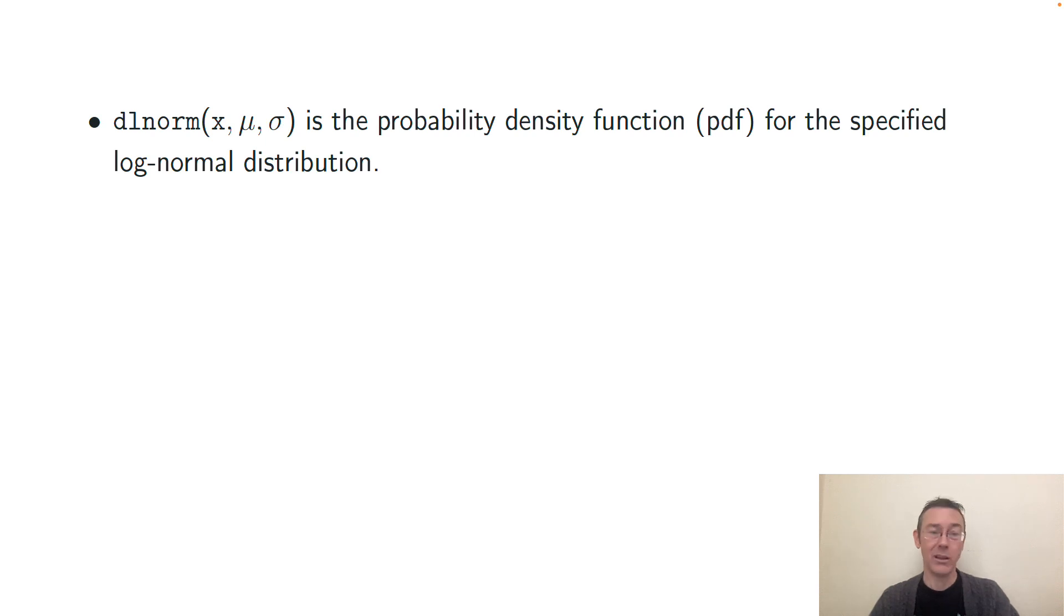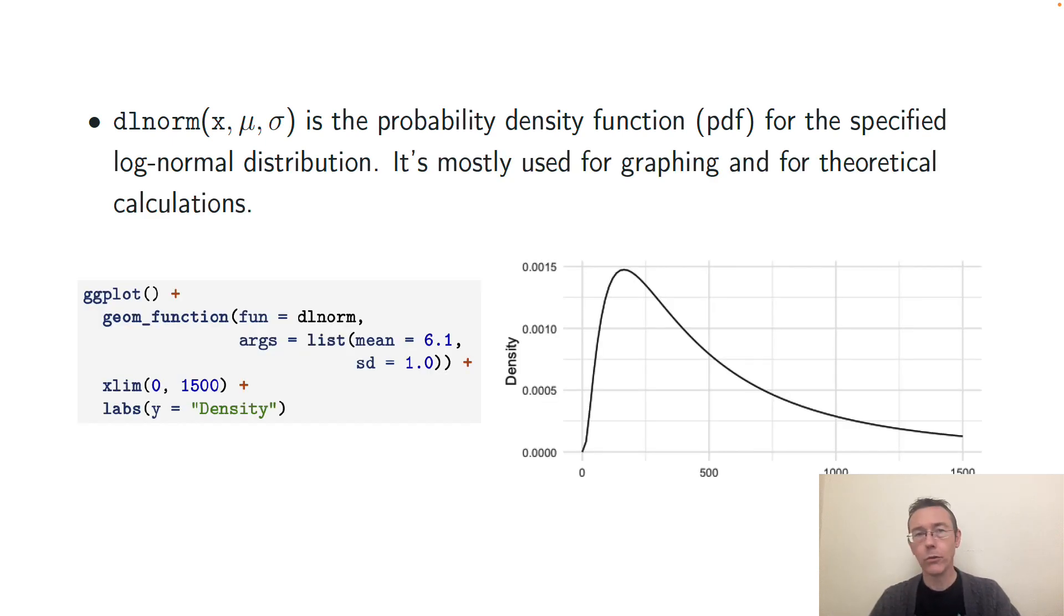Finally is dlnorm, and this is your probability density function for the specified log-normal distribution. This one is less useful generally when you're doing applied stuff. It's mostly used for theoretical calculations. The thing that you might find yourself wanting it for if you're using R is for graphing. And so here's some code that generates the density curve for that same log-normal distribution that we've been looking at throughout these slides.